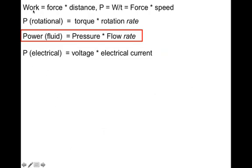Work is equal to force times distance. Power is the rate of work that you do, or work divided by time. So instead of force times distance, it would be force times speed. Power can be thought of as a force term times a speed term.